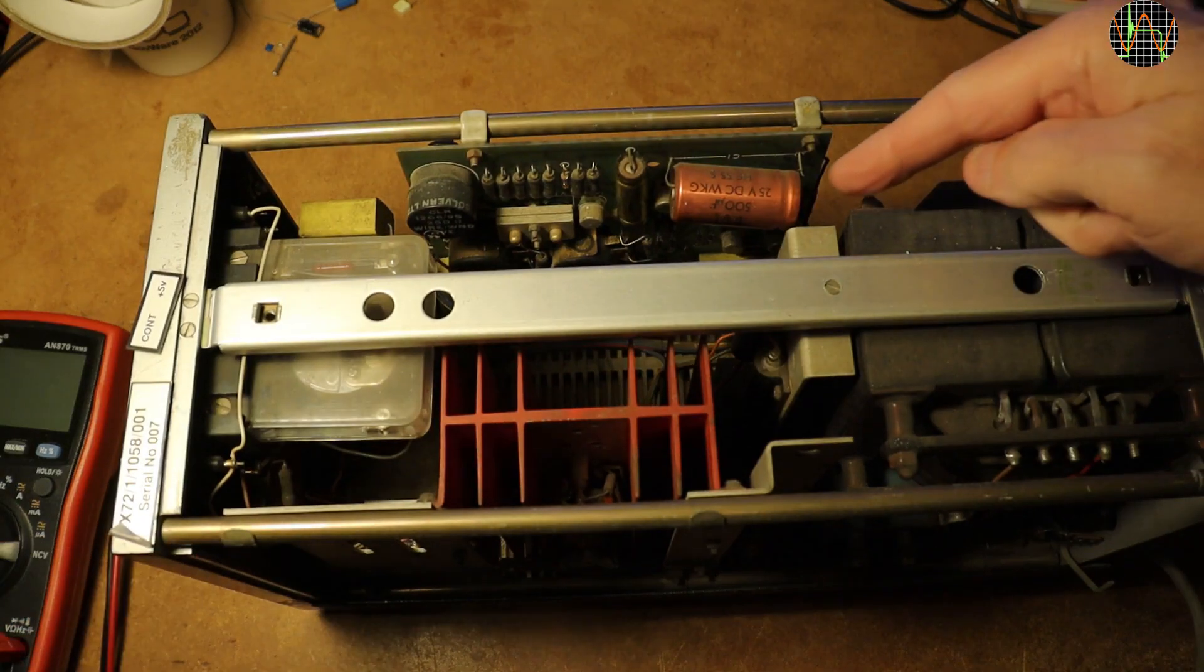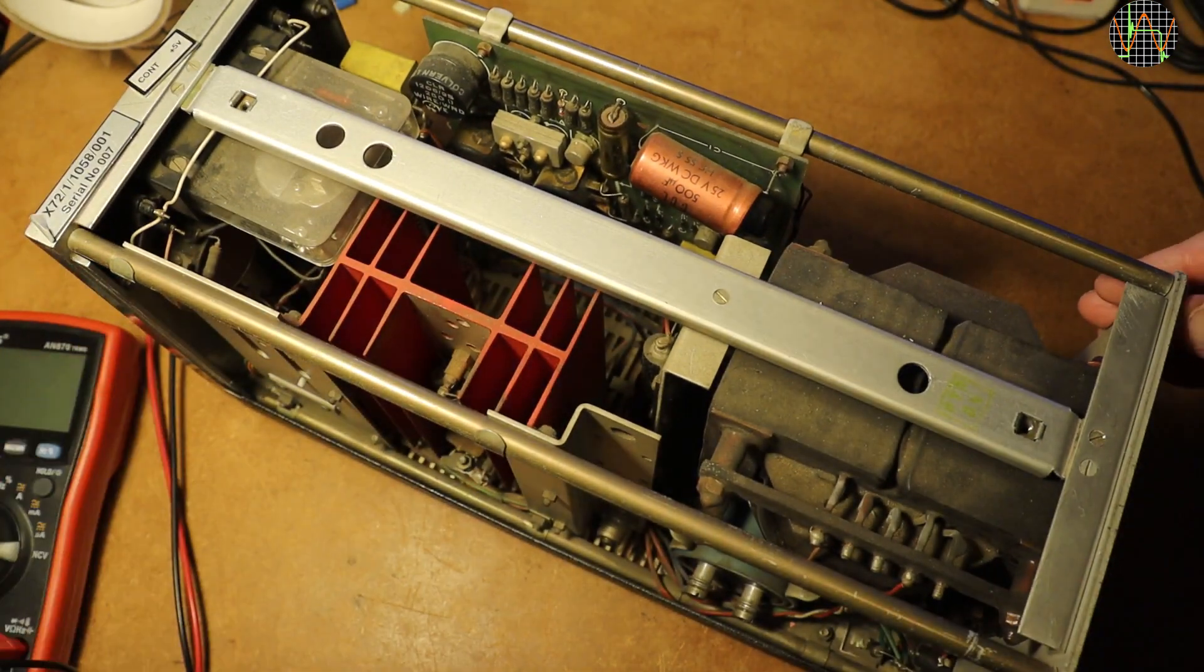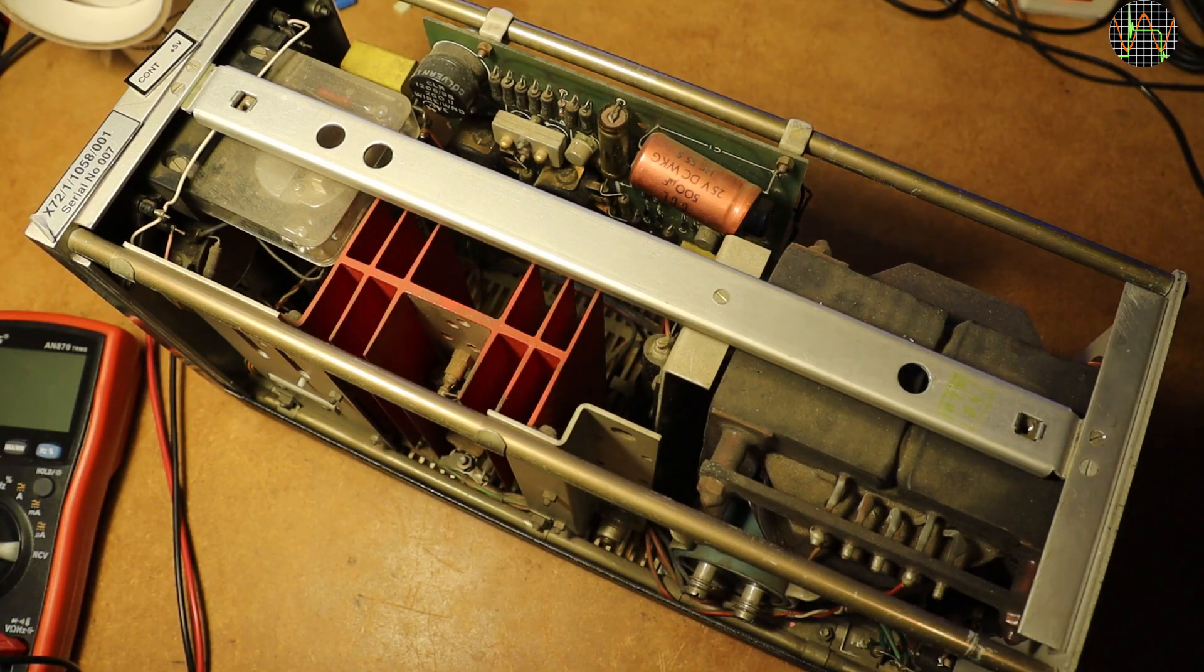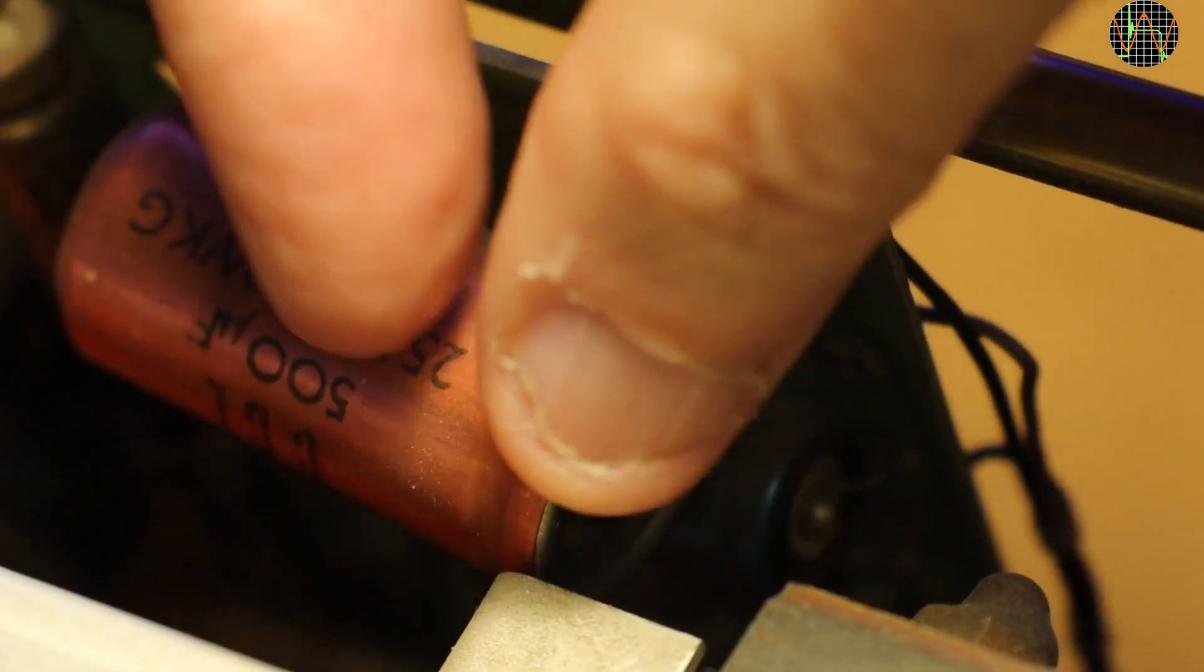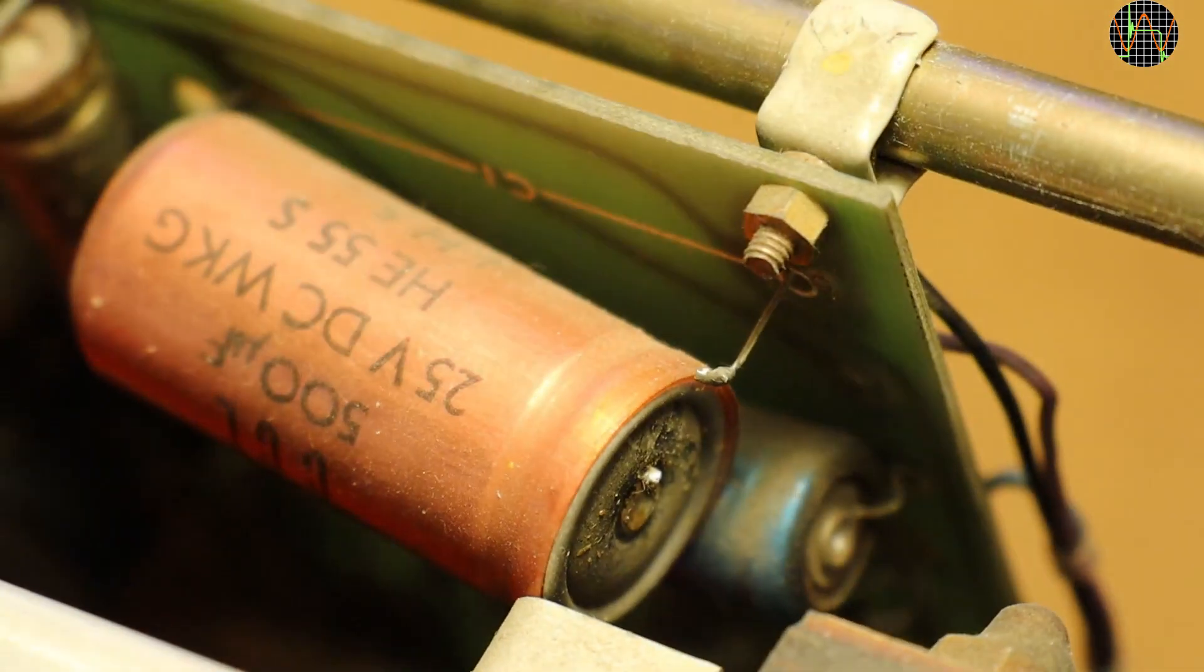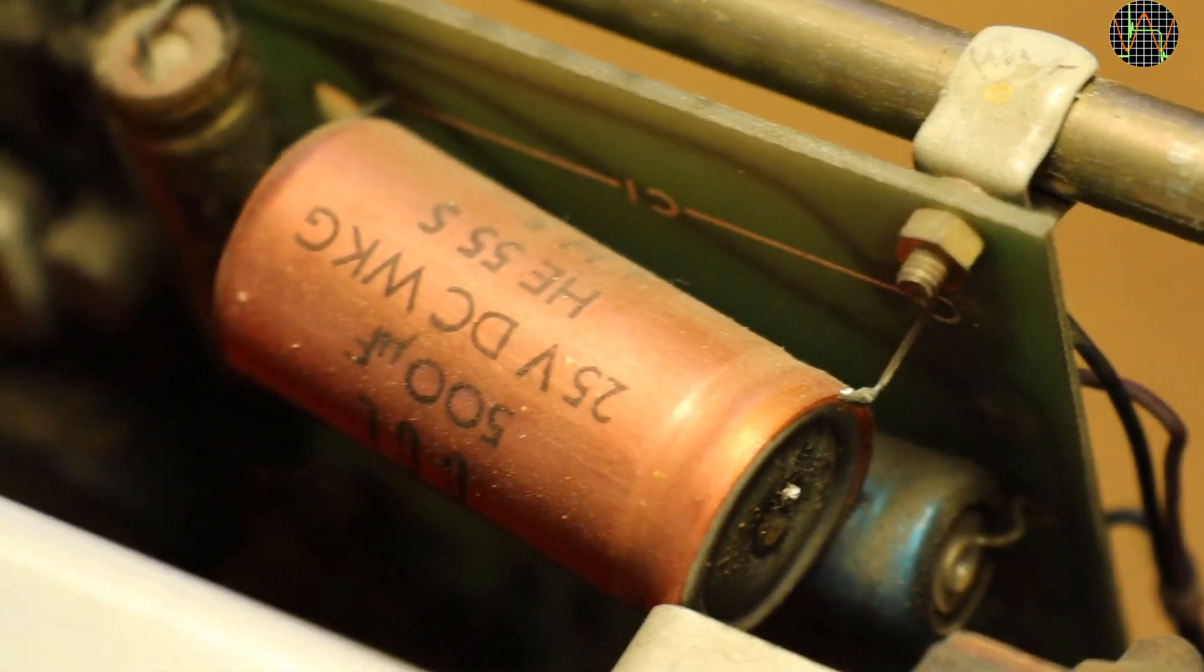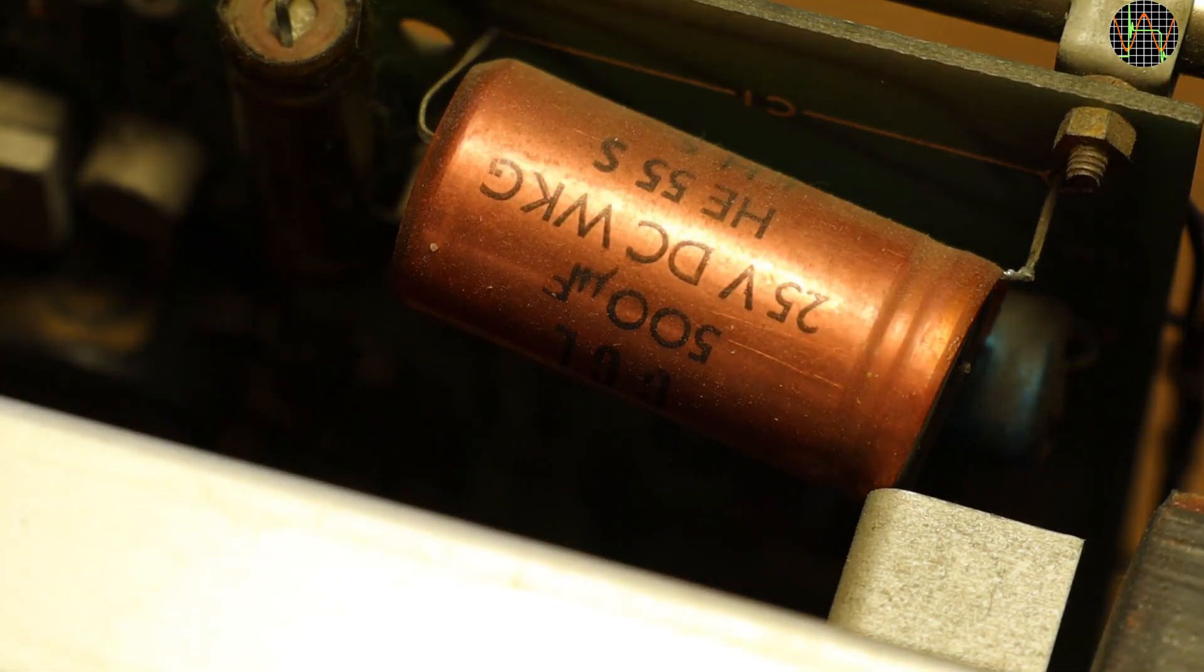Upon opening, a problem is quite obvious. One leg of that red electrolytic capacitor has broken off. Is it really that easy? A closer view of the problem. The capacitor is labelled C1 on the PCB and marked 500μF 25V. The positive leg has snapped off where it enters the capacitor body.